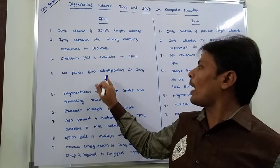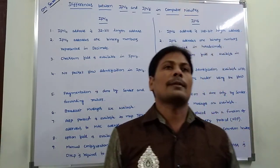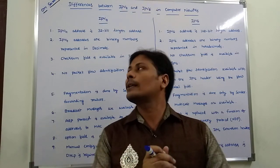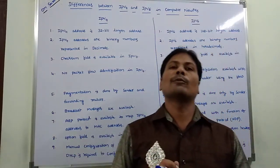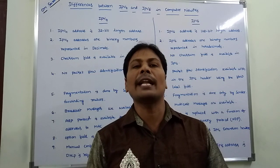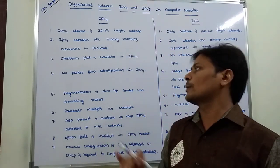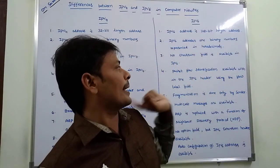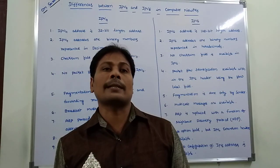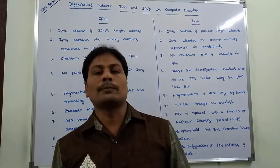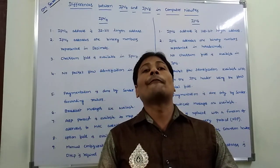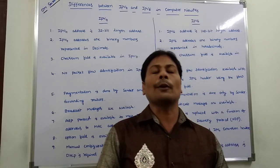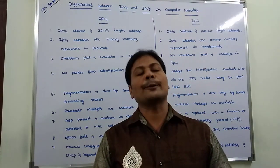Fourth point: there is no packet flow identification in IPv4. When transferring a packet from sender to receiver, we are not identifying the packet while it travels. But in the case of IPv6, packet flow identification is available by using the flow label field. By using this label, we can identify the packet flow while travelling from sender to receiver.